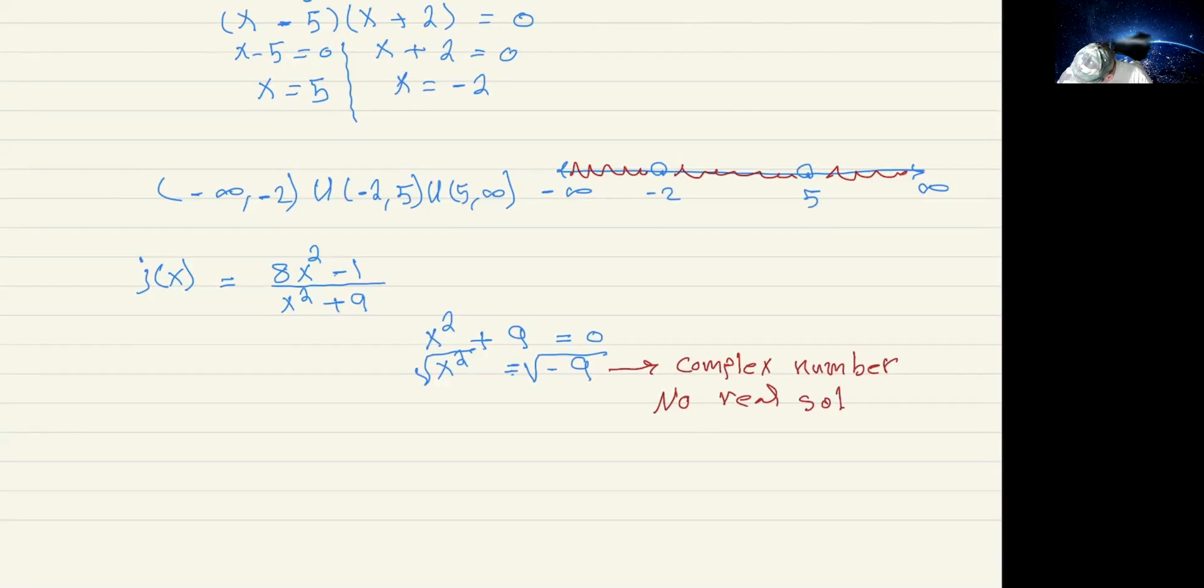So again, I'm going to graph the number line from negative infinity to infinity. But now I'm going to shade the whole line because there is no restricted value. So my domain in this problem is from negative infinity to infinity. I hope that this is clear. And we're going to go back to see more notations in the next video. Thank you.